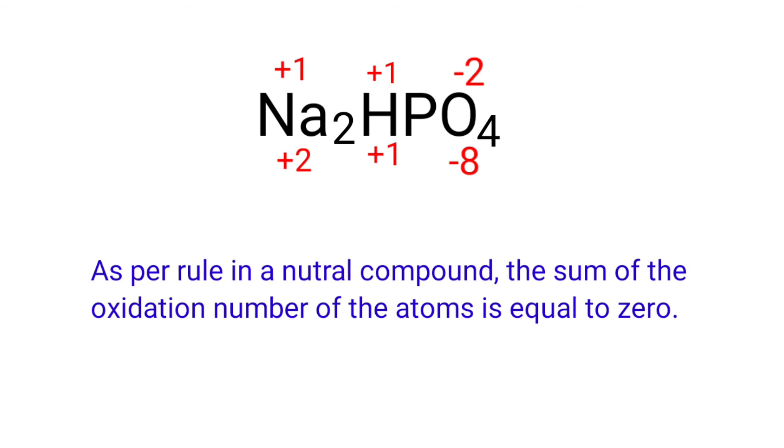As per rule in a neutral compound, the sum of oxidation number of atoms is equal to zero. So the numbers along the bottom must add up to zero. So the number under P must be plus five.